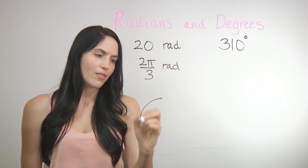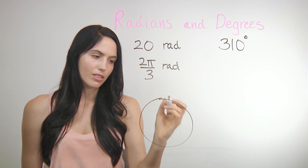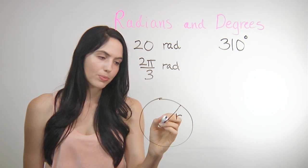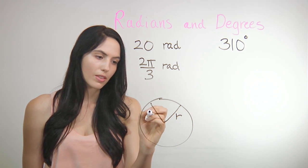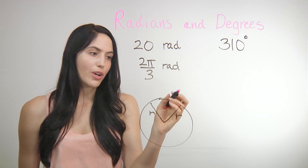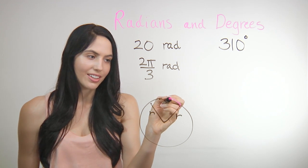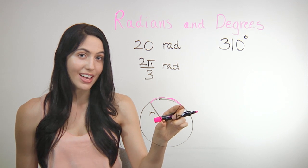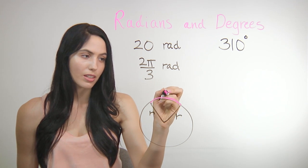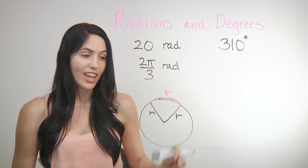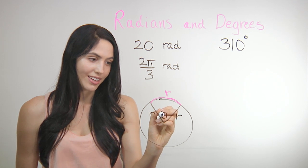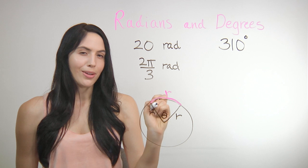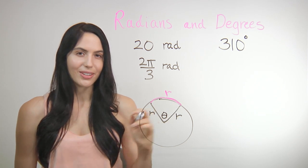So what is a radian? Technically, the definition is that if you have a circle with a radius r, and you traveled an arc length along the outside of the circle that was the same as r, the central angle theta that creates that length is one radian. That's the technical definition.